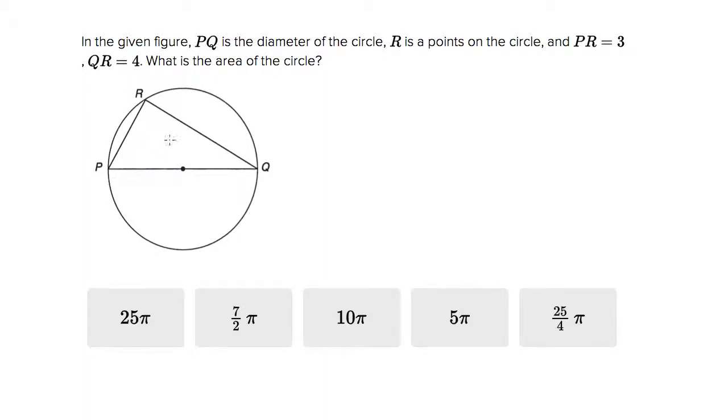R is a point on the circle. PR equals 3, so this side right here is equal to 3. QR is equal to 4, so this side right here is equal to 4.